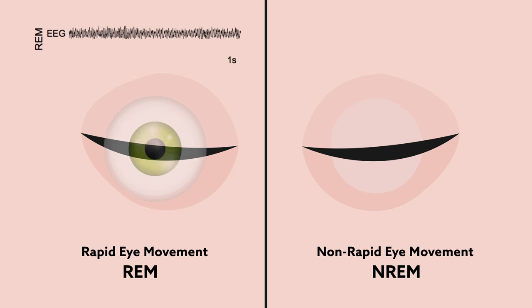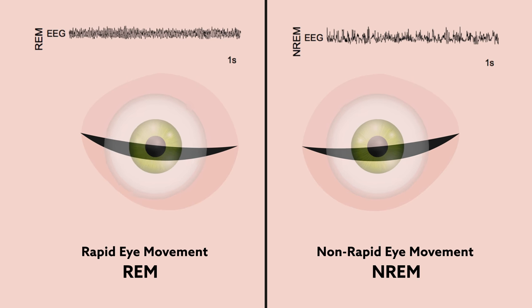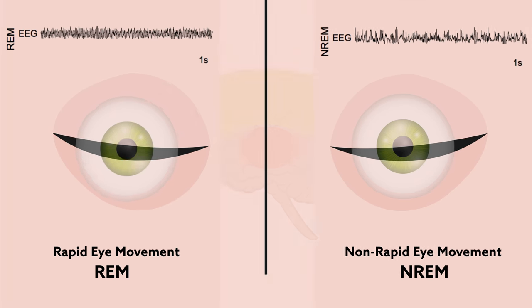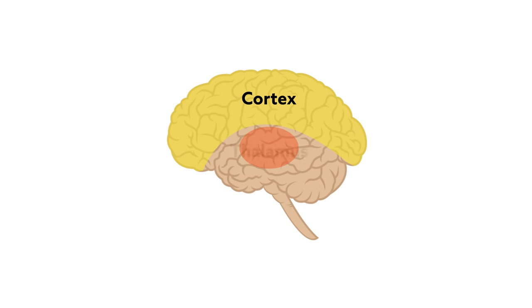Brain activity during REM sleep is fast and irregular, much like during wakefulness. In contrast, non-REM sleep is deep, with slow and rhythmic activity. This slow, steady rhythm is possible because of the coordination of two brain regions: the cortex and thalamus.